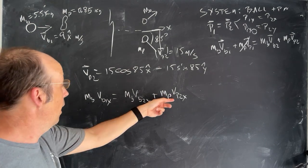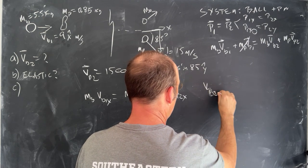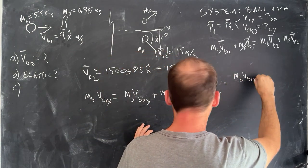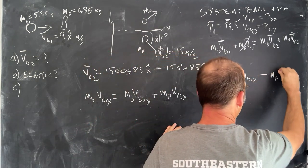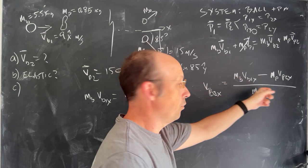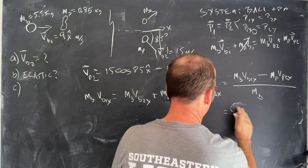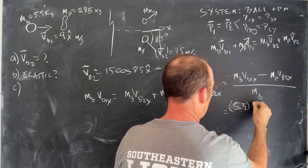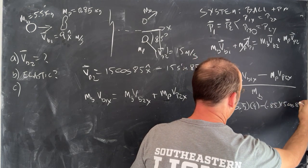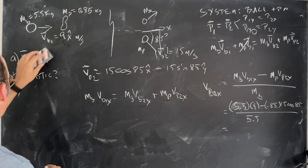I'm going to subtract the pin term from both sides and divide by the mass of the ball all in one fell swoop. So vB2x equals mb times vb1x minus mp times vp2x, all divided by mb. The units work out. Plugging in values: 5.5 times 9 minus 0.85 times 15 cosine 85, all of that divided by 5.5. I'll put that as my x component.